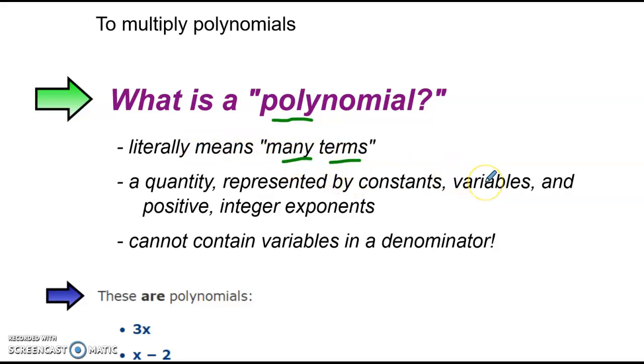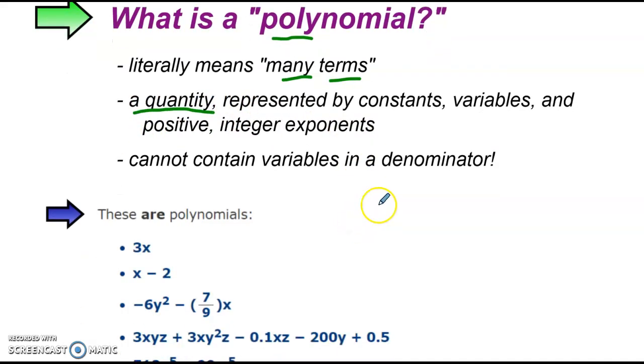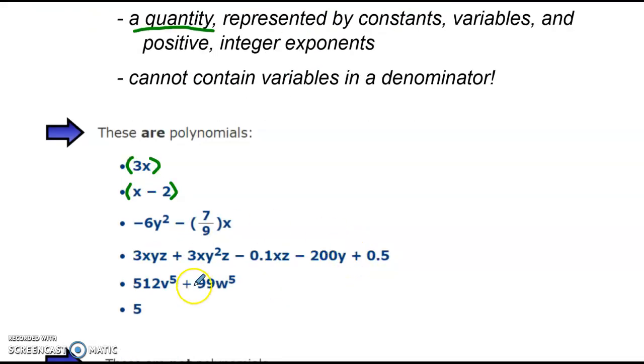But they still represent single values. The second part of the definition says that it's a quantity. To give you examples here, like 3x is a quantity, that's also a polynomial. x minus 2 is a quantity - I can't simplify this any further. I can treat this as a single value. x minus 2 is a polynomial, 3x is a polynomial. Any expression that you can't simplify is a polynomial, and the rest of these are as well.